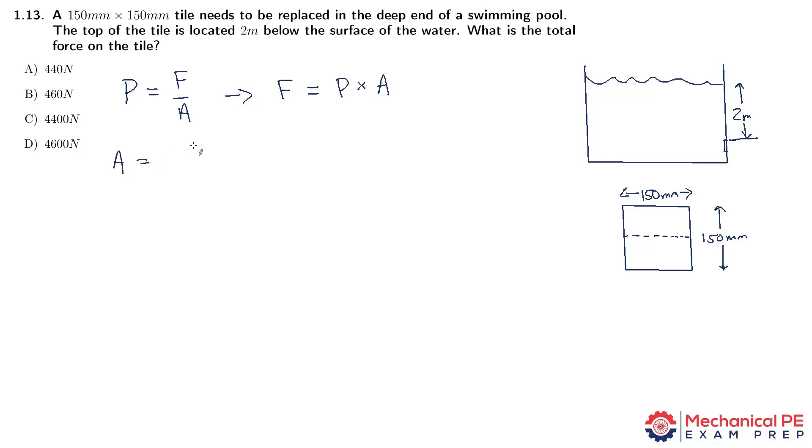So let's get the area quick. The area is going to be, let's do this in meters, so instead of 150 millimeters, I'll call it 0.15 meters squared, since it's a square, 0.0225 square meters.